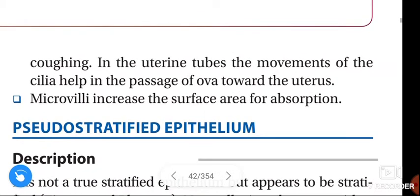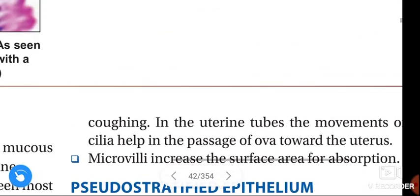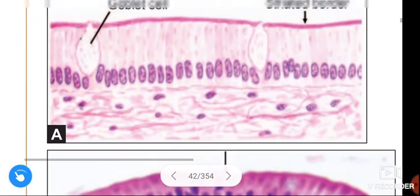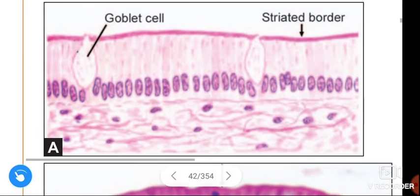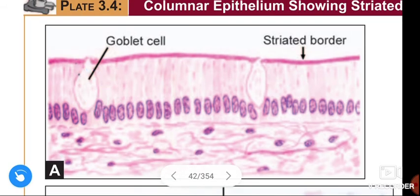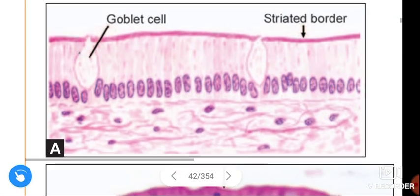Okay guys, this is about the columnar epithelium. See here — this is the striated border and these are the goblet cells. If you like this video, like, share, and subscribe. Thank you.